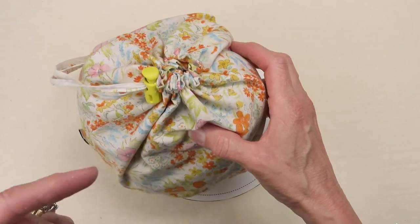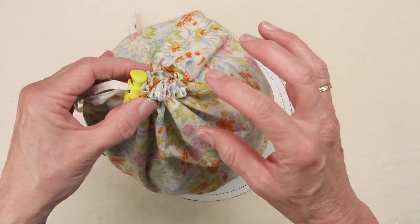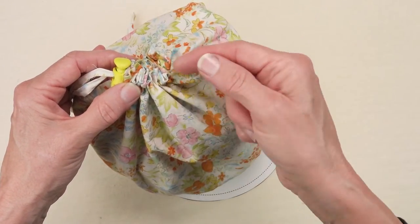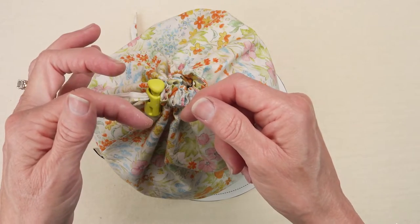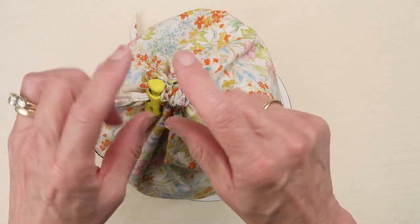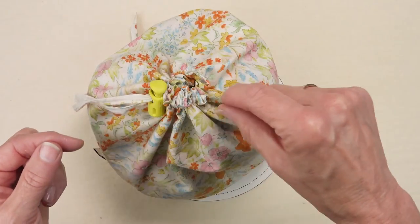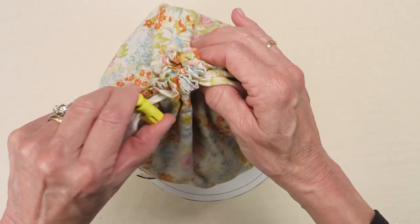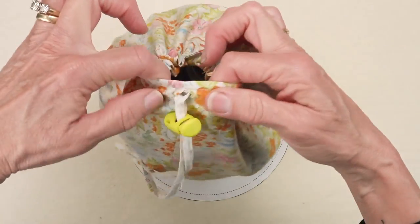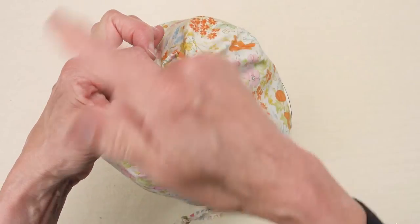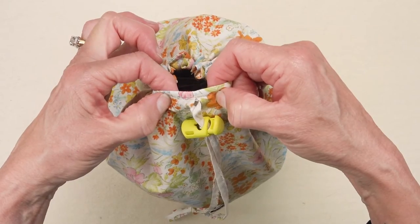but if you did not choose to line them, what you could do at the top is just fold under a quarter of an inch to create a sort of hemmed edge and then fold it down and create your casing there. You could also, instead of leaving an opening, use grommets and run your drawstring through grommets.